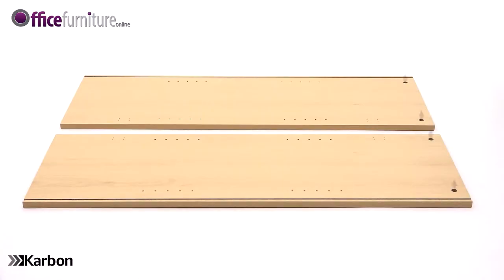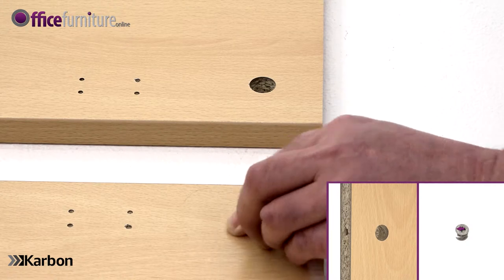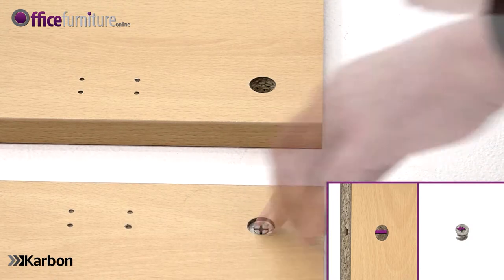Next, lay the side panels on the floor with the holes facing upwards. Insert 2 cams into each one. Make sure the arrow on the cams point towards the outer edge of the panel.